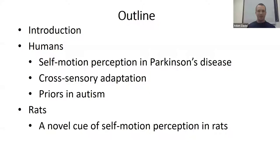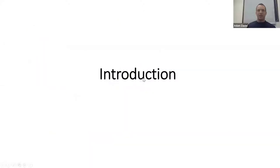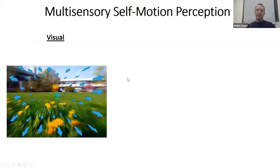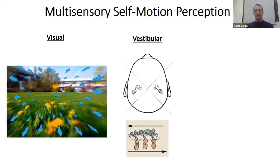By way of general introduction: we are walking around the world constantly and we need to know where we are. It's one of the most basic needs in order to interact with the environment. We use many senses to do this — that's why it's multi-sensory. The visual sense detects optic flow: as you move in one direction the world seems to move on your retina in the opposite direction, giving you a cue as to where you're moving in space.